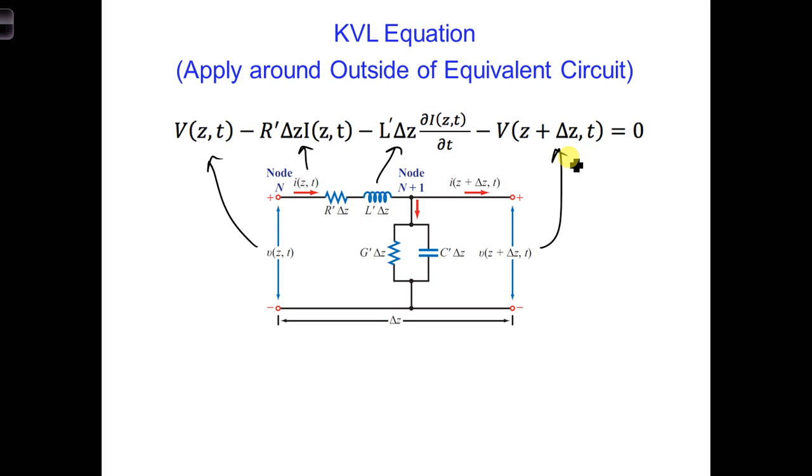We can apply the same steps as we did earlier for the Kirchhoff's current law equation to this Kirchhoff's voltage law equation. That is, we can put similar terms on the left and similar terms on the right. The current would go on the right and the voltage would go on the left. We can also divide by delta Z as before and also take the limit where delta Z goes to zero.